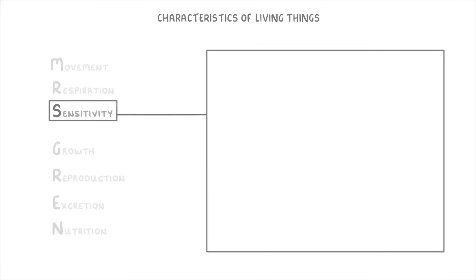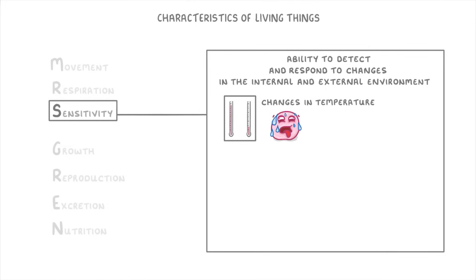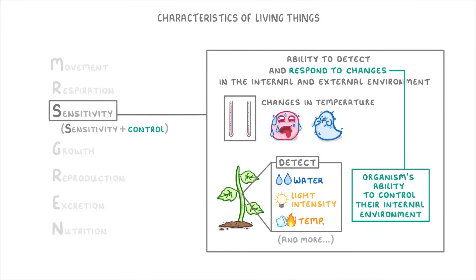For Sensitivity, we can describe this as the ability to detect and respond to changes in the internal or external environment. This is the idea that we can detect things like changes in temperature, which we can then respond to by doing something like sweating or shivering. All other organisms can do this as well — for example, plants can detect water, light intensity, temperature, and more. You might sometimes see this point as 'sensitivity and control,' as the responding part can be thought of as an organism's ability to control their internal environment — like their temperature, water levels, and pH levels.